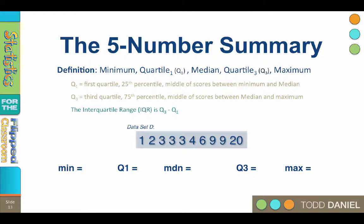Quartile one is the first quartile, aka the 25th percentile, the middle of the scores between the minimum and the median. Quartile three is the third quartile, also called the 75th percentile. It's the middle of the scores between the median and the maximum.